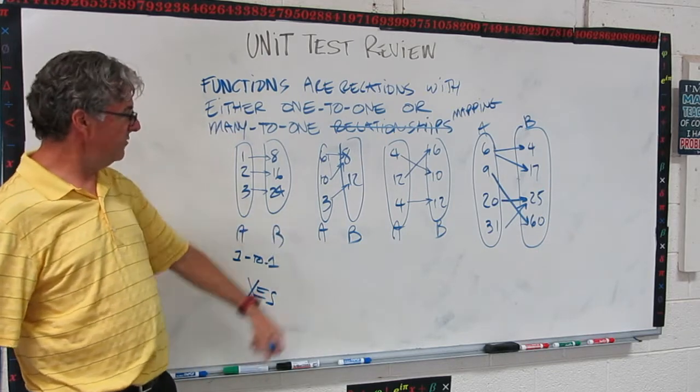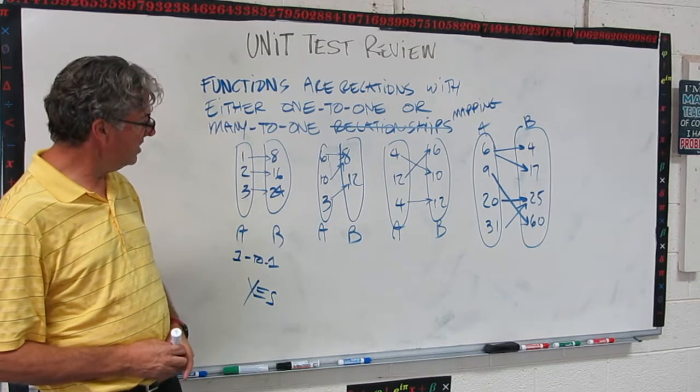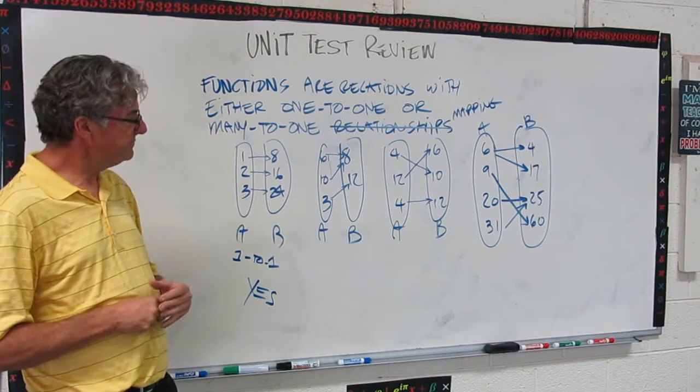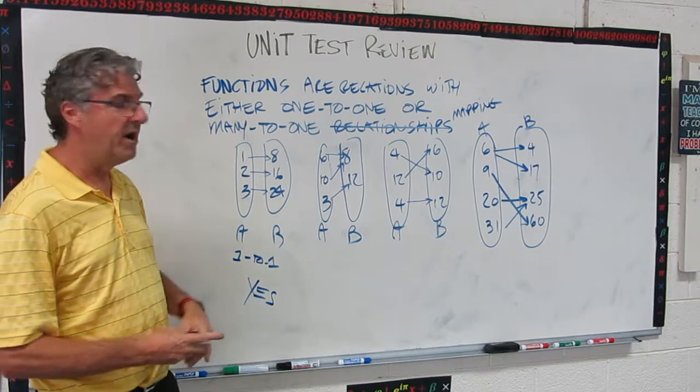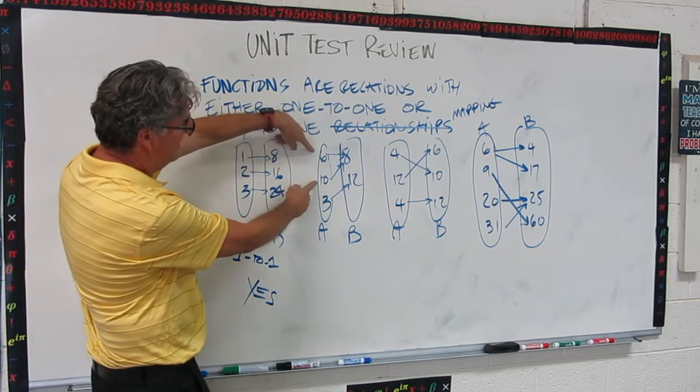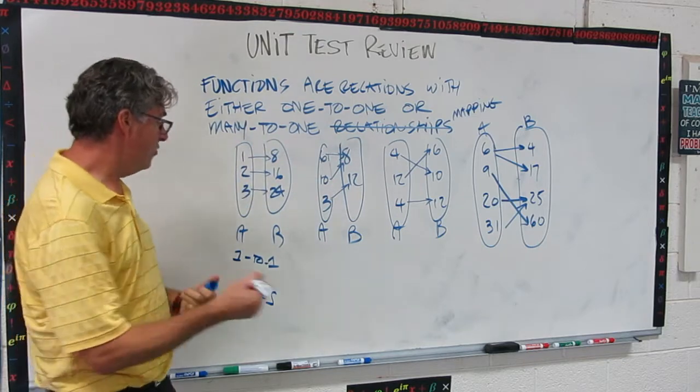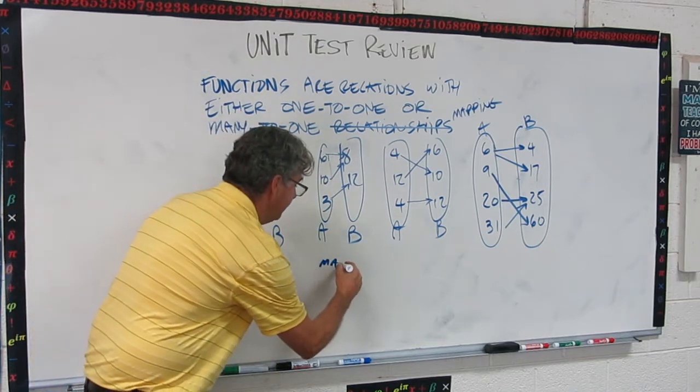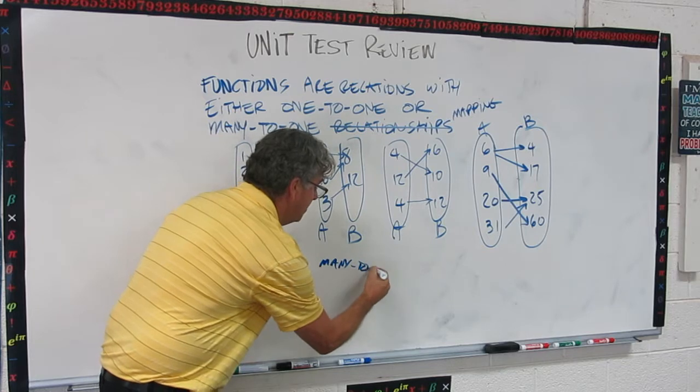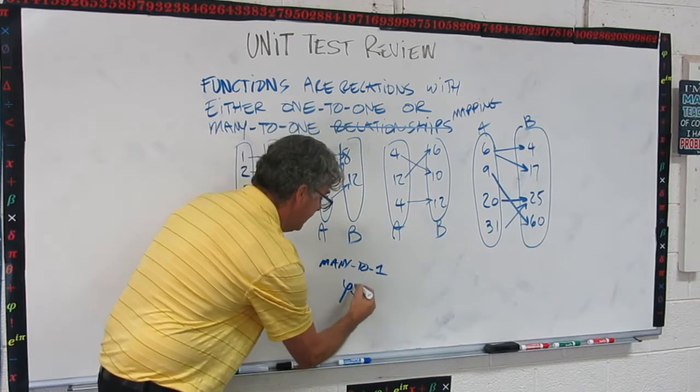Now how about this one? What have we got here? Take a look at the mapping. This is a many-to-one. We have these two that map to the same one. So that makes it a many-to-one. Many-to-one is okay. So this is many-to-one. And that would be yes as well.